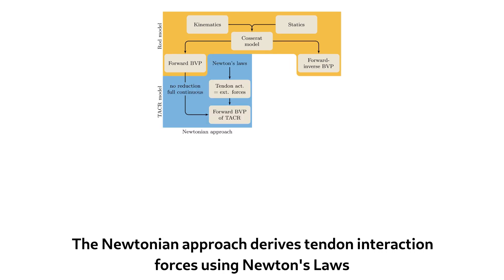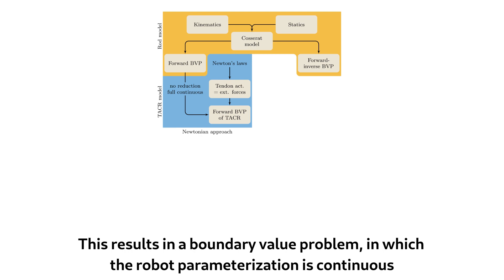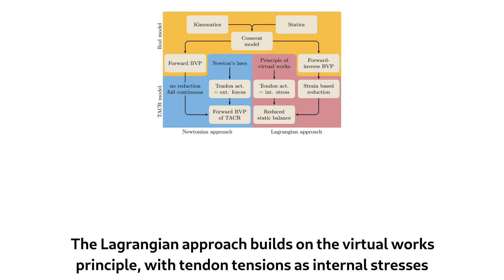The Newtonian approach derives tendon interaction forces using Newton's laws. This results in a boundary-value problem, in which the robot parameterization is continuous. The Lagrangian approach builds on the virtual works principle, with tendon tensions as internal stresses.